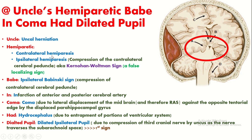Contralateral hemiparesis occurs because of the underlying lesions like intracranial bleed or intracranial space-occupying lesions. Ipsilateral hemiparesis can occur in cases of uncal herniation because of compression of the contralateral cerebral peduncle by the lateral displacement of the brain tissue. This is a false localizing sign and is also known as Kernohan's notch sign.